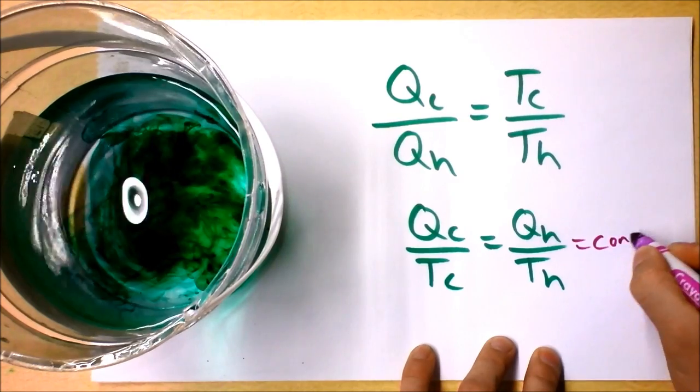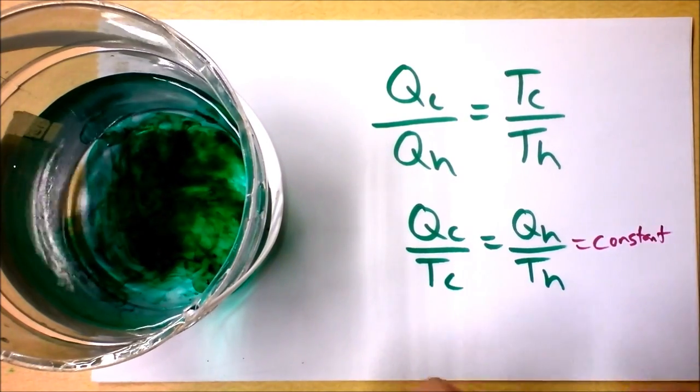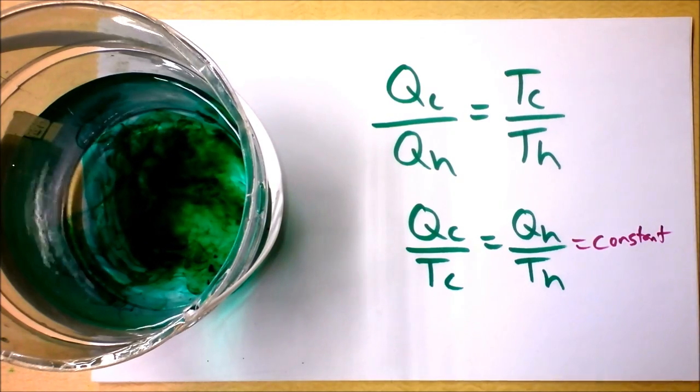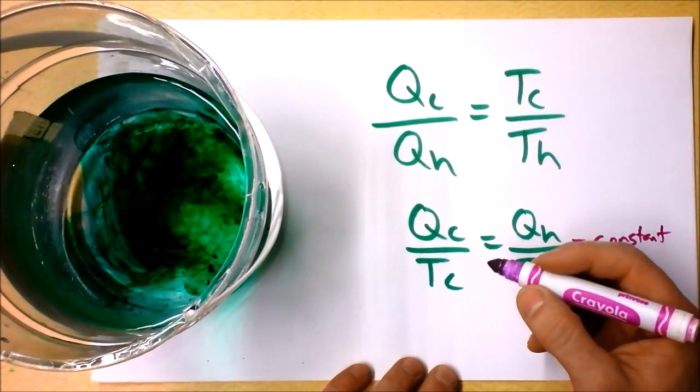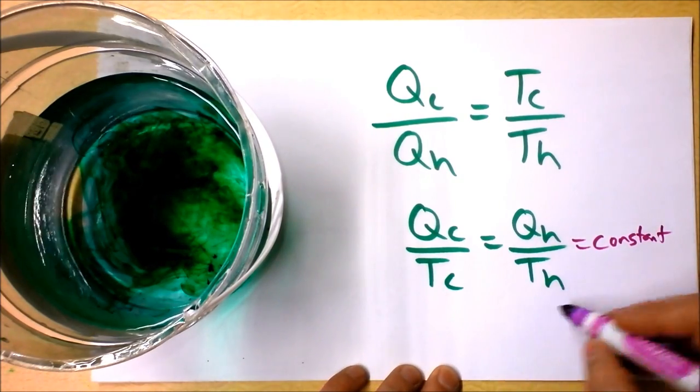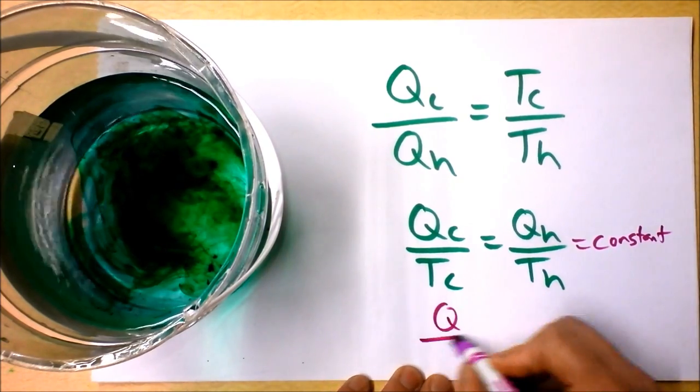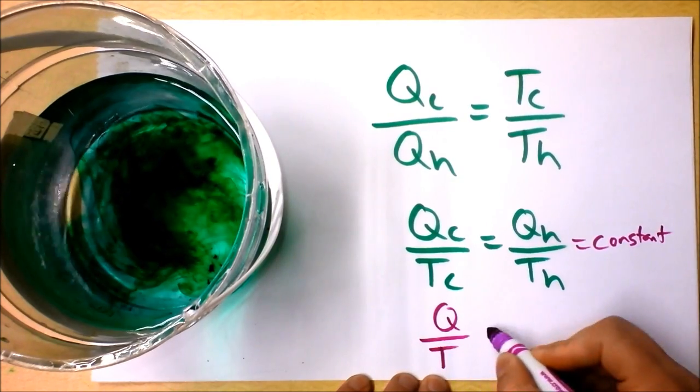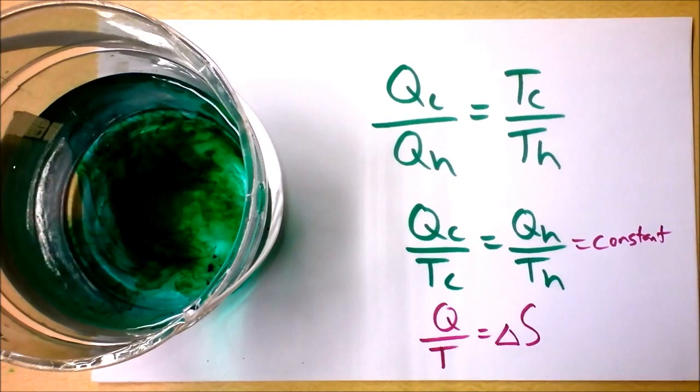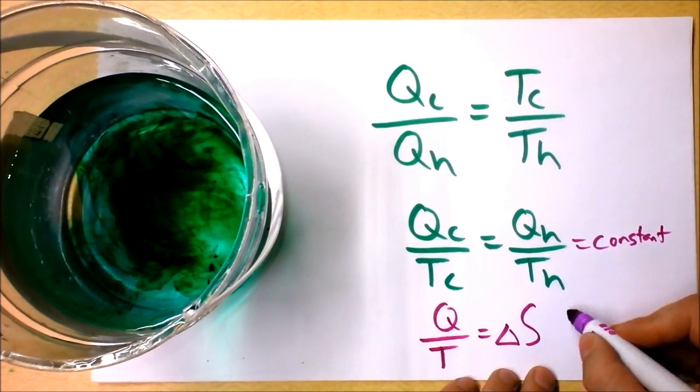So these things then are a constant. This must be some constant and they would apply for any reservoir at any temperature. And we define this then, this interesting constant, let's define it to be entropy. We're going to say that Q divided by T is a change in entropy if there's a reversible process.